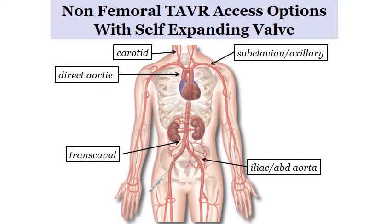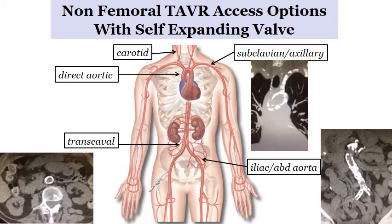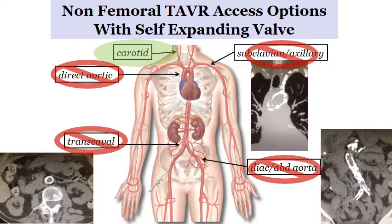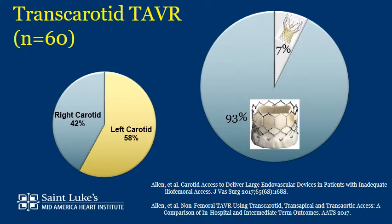Non-femoral TAVR access options with self-expanding valves at our institution include all of the following. However, heavy calcification in the abdominal aorta, iliacs, arch, and subclavian arteries made carotid access the most favored option.